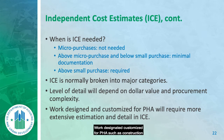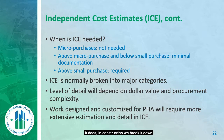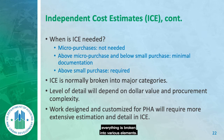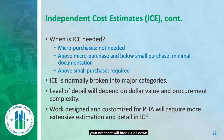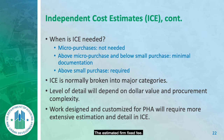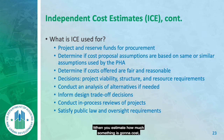Work customized for a PHA such as construction may require a more extensive estimation. In construction, we break it down using the schedule of values — the architect breaks everything into different levels of effort: plumbing, electrical, HVAC, and arrives at a total. I take that breakdown and put it behind the ICE, but on the ICE form itself I only list the estimated firm fixed fee.